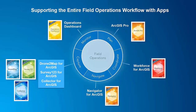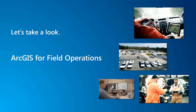The ArcGIS apps for the field support this workflow. These include ArcGIS Pro for planning, Workforce for ArcGIS for coordination, Navigator for ArcGIS for navigating to work, and three options for data capture: Drone to Map for converting drone imagery, Survey123 for form-based surveys, and Collector for ArcGIS for gathering map-centric data. Operations Dashboard is used for monitoring. These apps work seamlessly together and can be implemented without writing any line of code. Now we're going to show you how these apps work together around a hydrant inspection scenario.